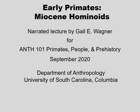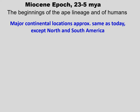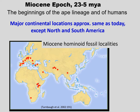Let's examine the beginning of the hominoids, or apes, during the Miocene epoch. It's during the Miocene that we see the beginnings of the ape-human lineage. At this time, the continents were approximately in the same positions that they are today, except that South America had not yet joined up with North America. Fossil localities where Miocene hominoids are found are concentrated in Southern Europe, Africa, and over into Asia.